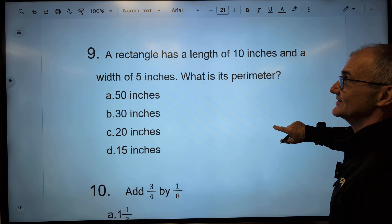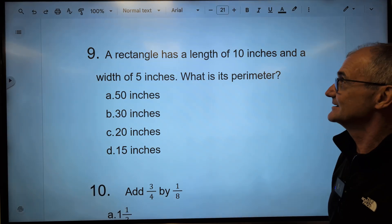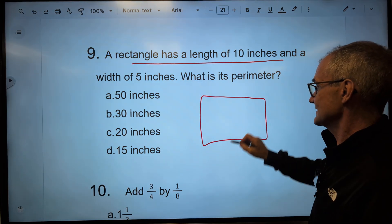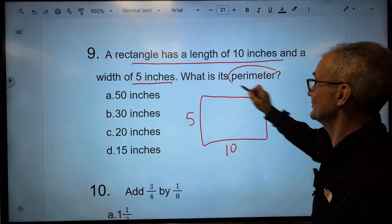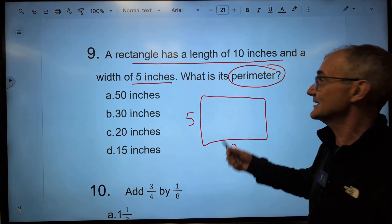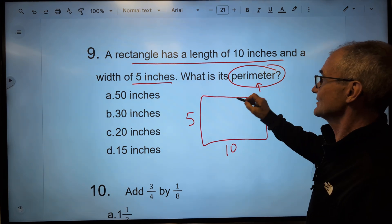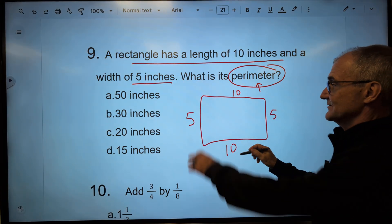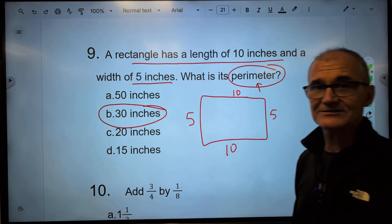We'll move on to number 9. Pause it, give it a try, unpause, watch how I do it. A rectangle has a length of 10 inches. I've got to draw that picture out. So it has a length of 10 inches and a width of 5 inches. What is the perimeter? Well, you naturally want to multiply those together to get 50. That's not the correct answer. It's not asking you for area. This is the most important part of the problem. What is the perimeter? Which means how long around the outside. If that's 10, that's 10. If that's 5, that's 5. 10 plus 5 is 15. 15 plus 15 is 30. Correct answer, 30 inches.